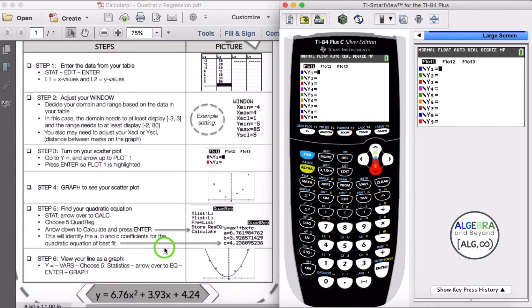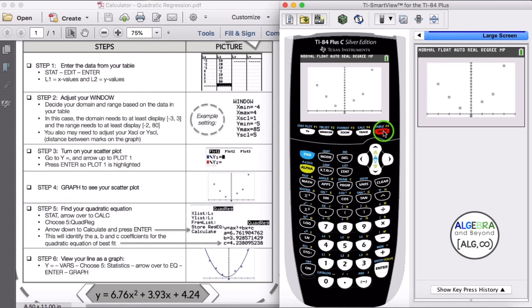Step 4, we're going to graph our scatter plot. So I'm going to choose graph and make sure that it shows up, and it does, which is great.